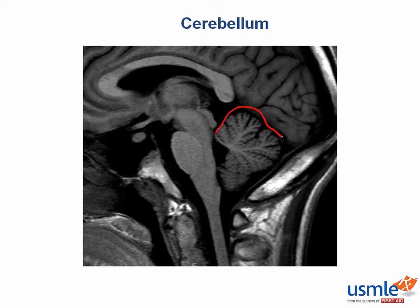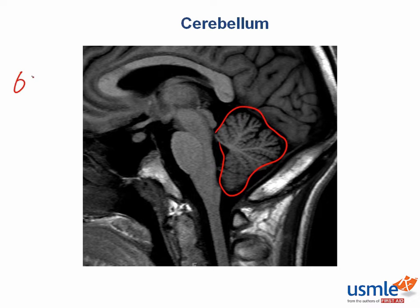The cerebellum, shown in this MRI, means 'little brain' in Latin. It integrates sensory inputs from the brain and spinal cord and uses them to coordinate smooth motor movements. People with disorders in the cerebellum have problems with two things: balance and coordination.